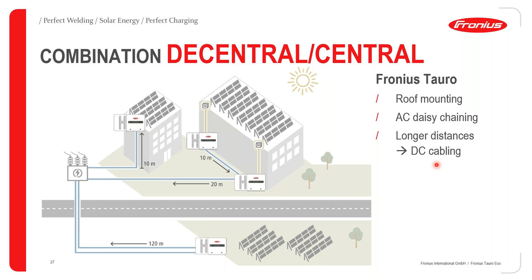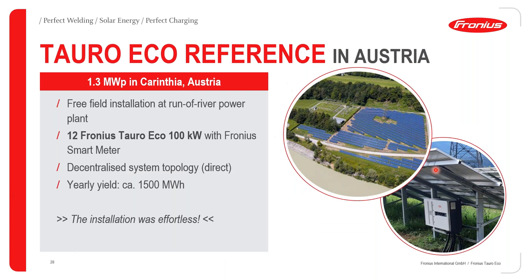This is where the Taro ECO comes into play, and this is what makes it stand out as a cost-optimized commercial inverter. We have a reference: a 1.3 megawatt peak installation in Carinthia, Austria — a free-field installation at a run-off river power plant. Here we have installed 12 units of Fronius Taro ECO 100 kilowatts with the Fronius Smart Meter. It is a decentralized system topology with a yearly yield of 1,500 megawatt hours. The installation was near effortless — a straightforward and easy process to implement.